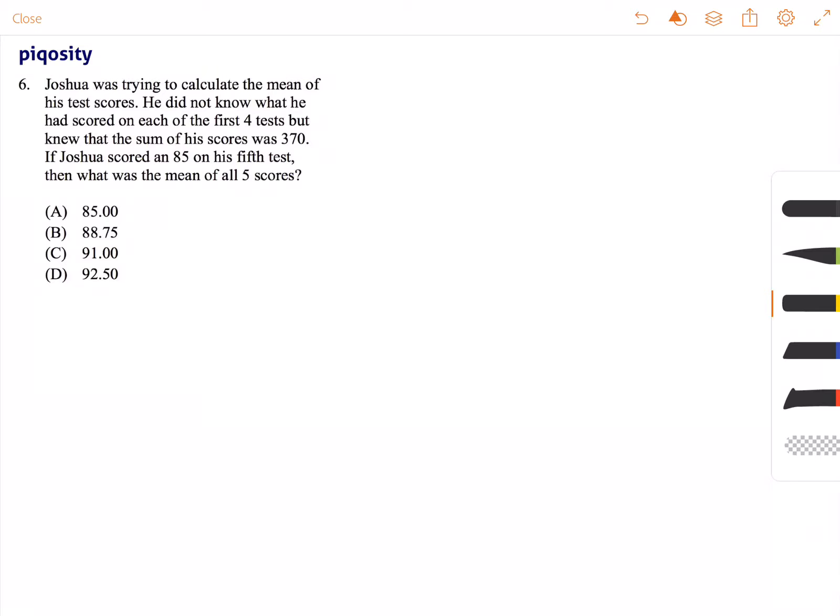Joshua was trying to calculate the mean of his test scores. He did not know what he scored on each of the first four tests, but he knew that the sum of those scores was 370. If Joshua scored an 85 on his fifth test, then what was the mean of all five scores?